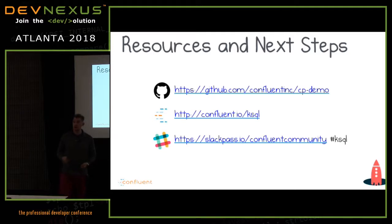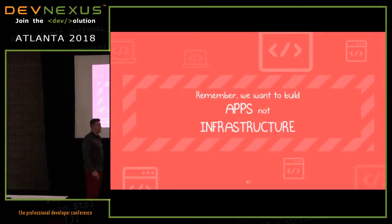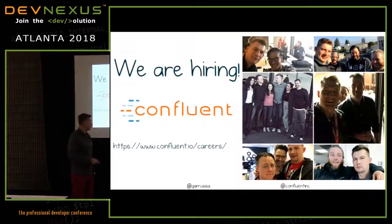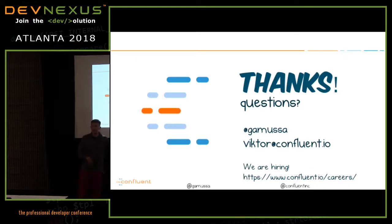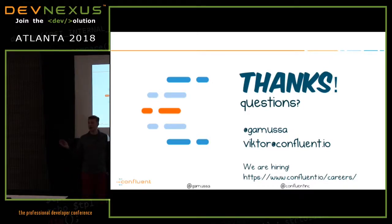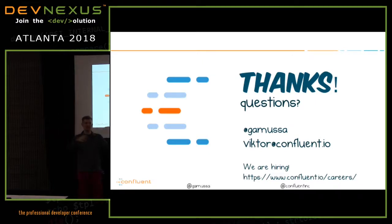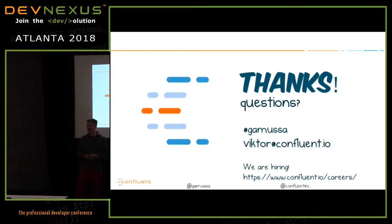Three things to remember: Google for the Machete Order of Star Wars, get the CP demo, and join our community Slack channel. Also follow me on Twitter. Remember — we're writing apps, not infrastructure. We love writing code and this is how things should move forward. We're hiring if you want to join the team. Thanks for your time — videos will be published. I'll be heading to the Java Puzzlers talk and will answer Kafka Streams questions along the way. Thank you!